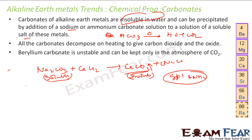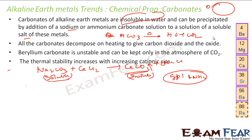Beryllium carbonate is very unstable. The reason is that the carbonate ion is large and beryllium is small, so the size difference is very high, making it unstable. As you go down the group, the size of the metal increases and becomes almost comparable to the carbonate ion, so the compounds become thermally stable. Going down the group, the metal size increases and becomes comparable to carbonate size, so stability increases.